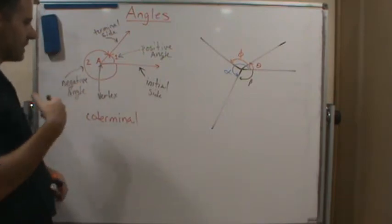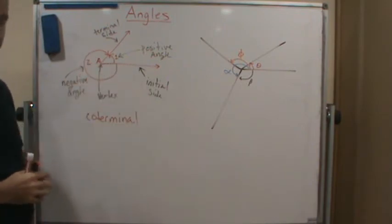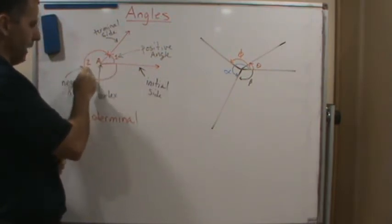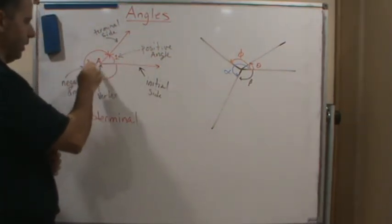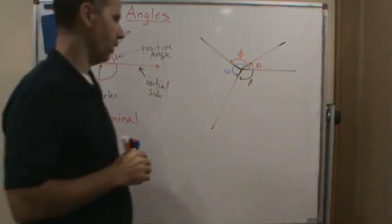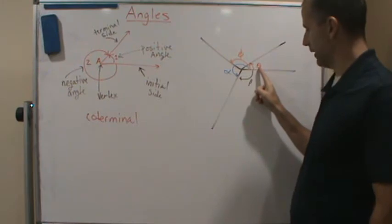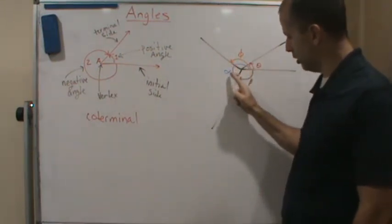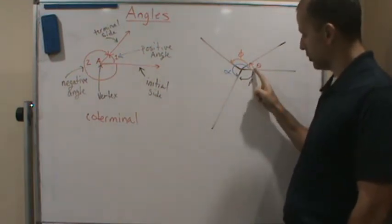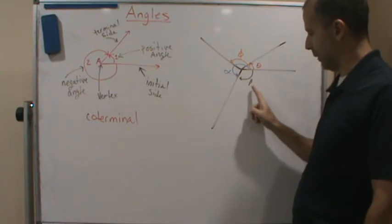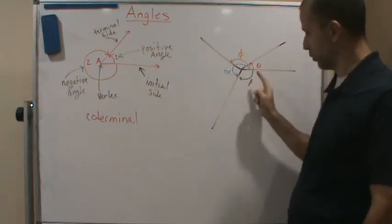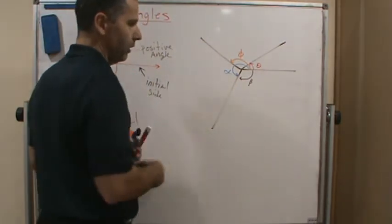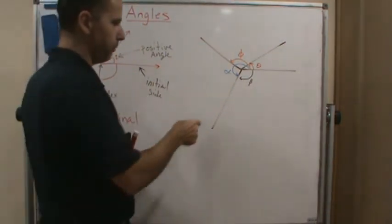We usually put the symbol between two points, or we have a circle with an arrow and label that. The vertex usually needs three points. So this angle here is angle theta, the angle from here to here is angle phi, and from here all the way to this one would be angle alpha. Going the other way gives us angle beta, which is a negative angle going in the clockwise direction, whereas angle alpha is the positive angle.